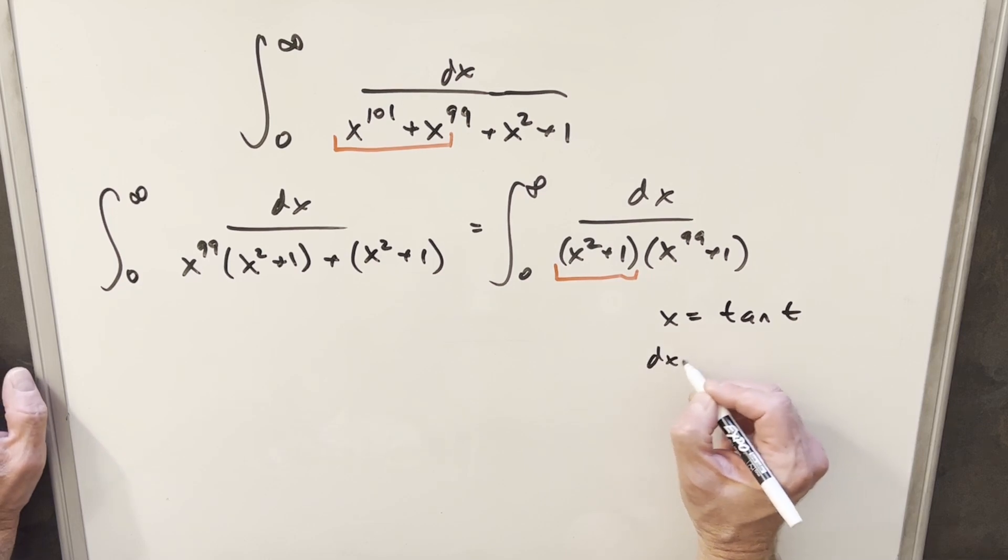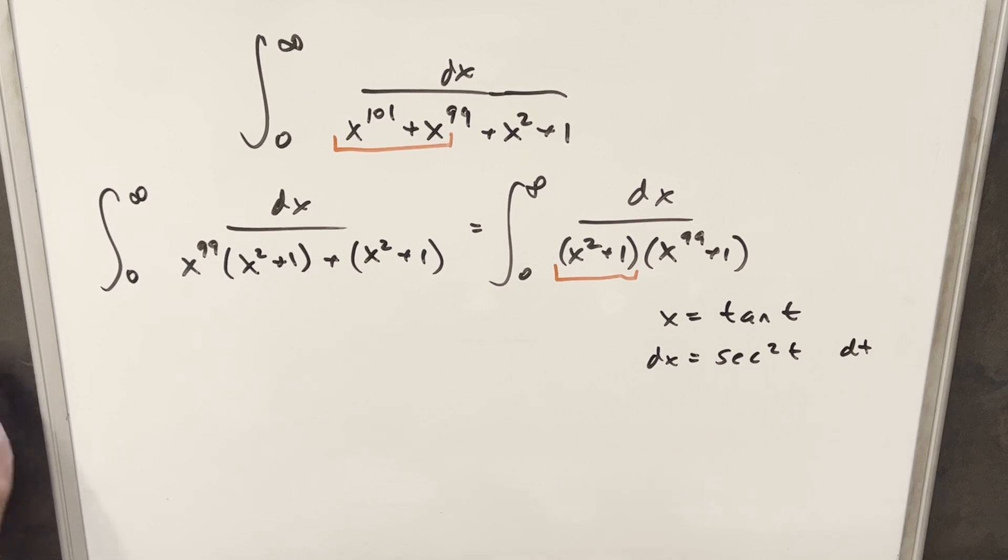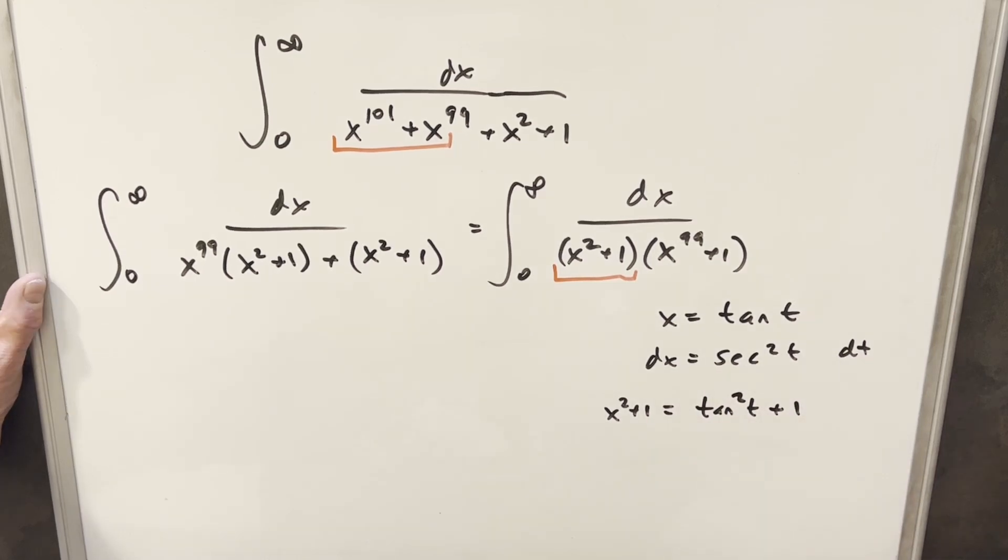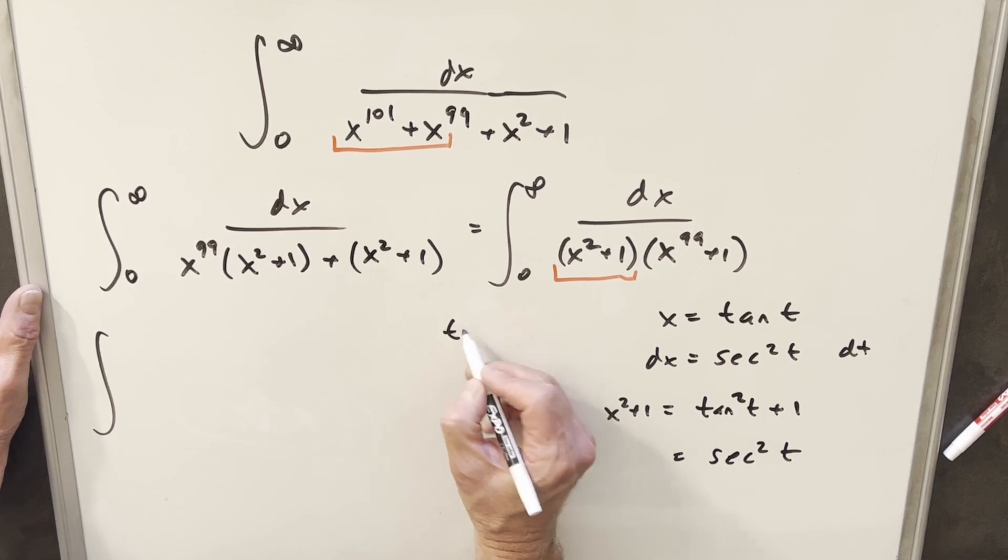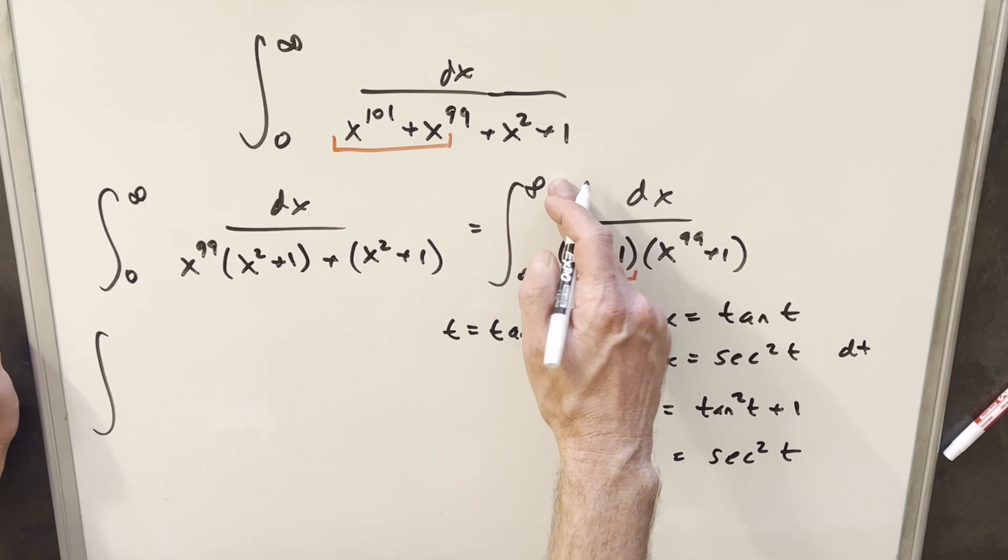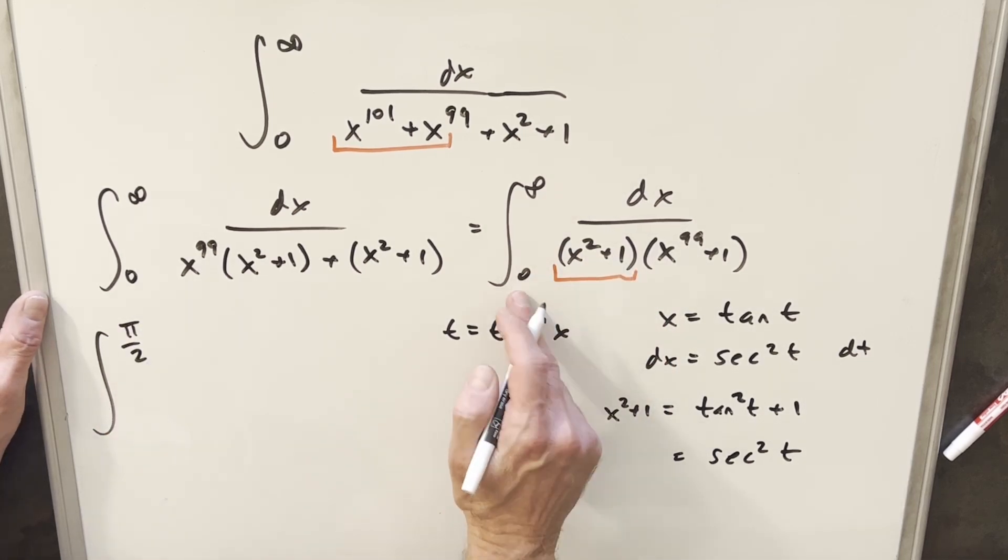Then dx is going to be secant squared t dt. And while I'm at it, x squared plus 1 is going to be tan squared t plus 1. But tan squared t plus 1 can be written as secant squared t. And maybe just make this a little easier, here we can write t as tan inverse x. So then first evaluating at infinity, arctan at infinity is going to be pi over 2, and arctan at 0 is just 0.